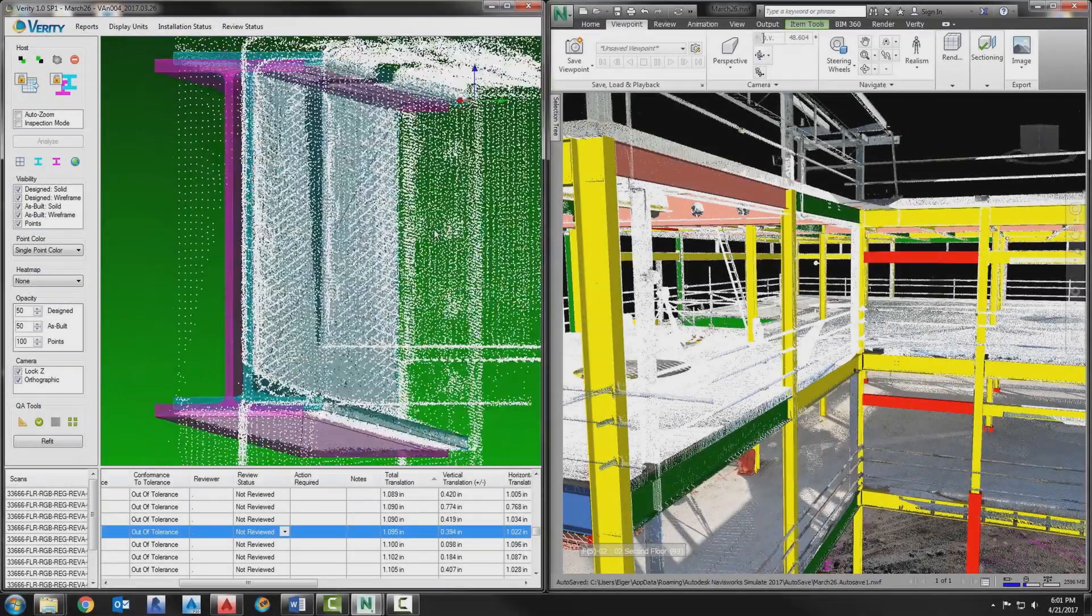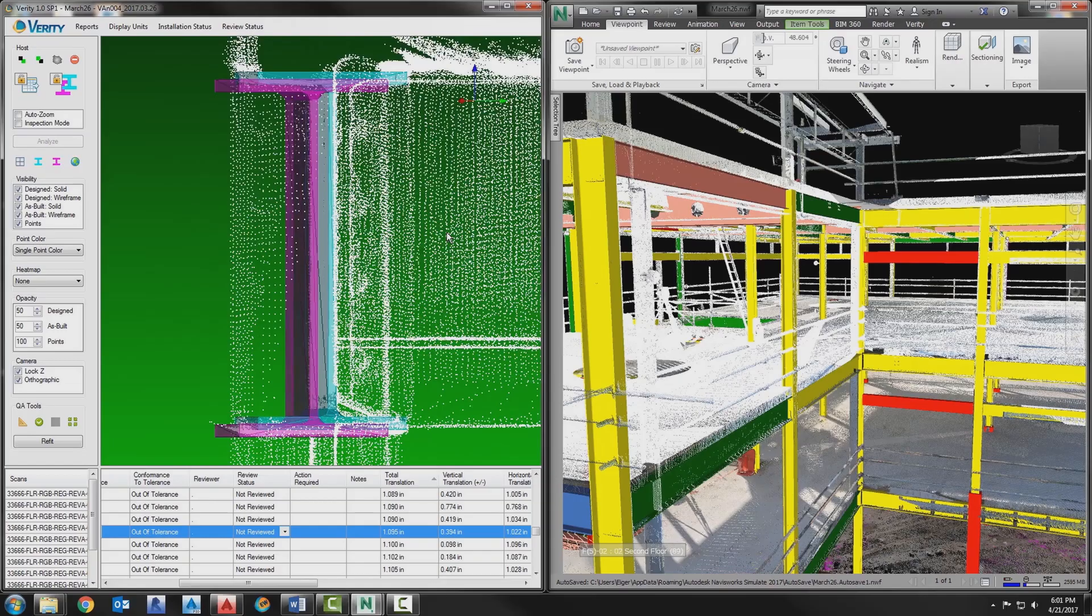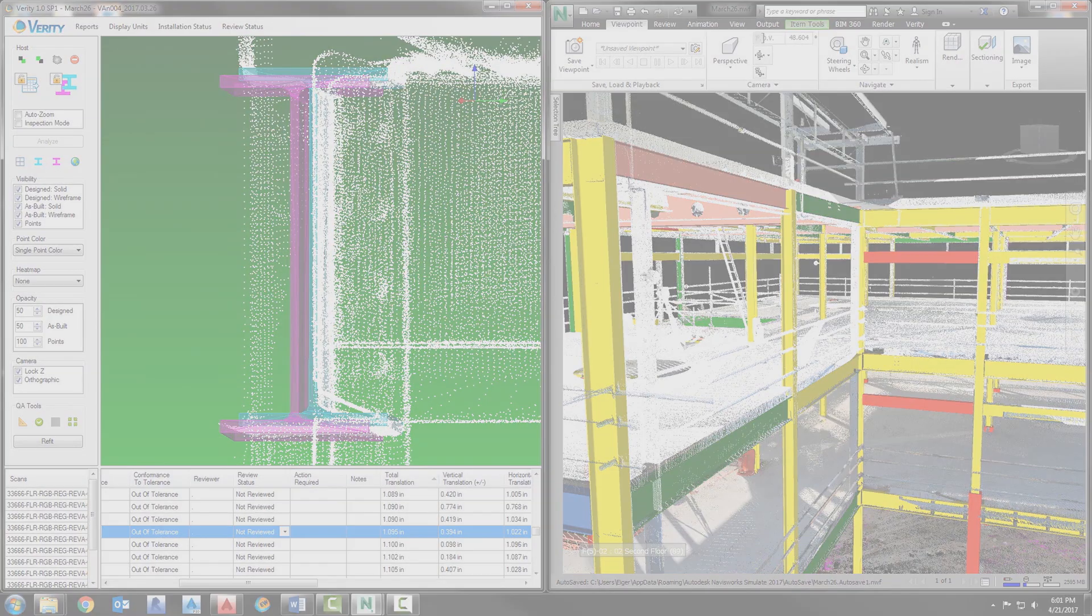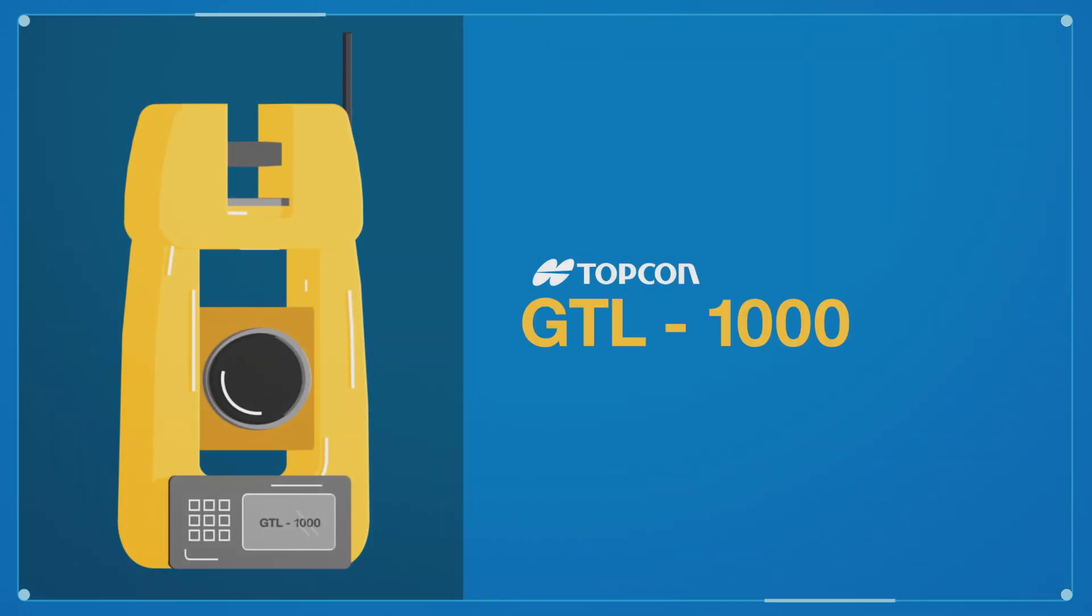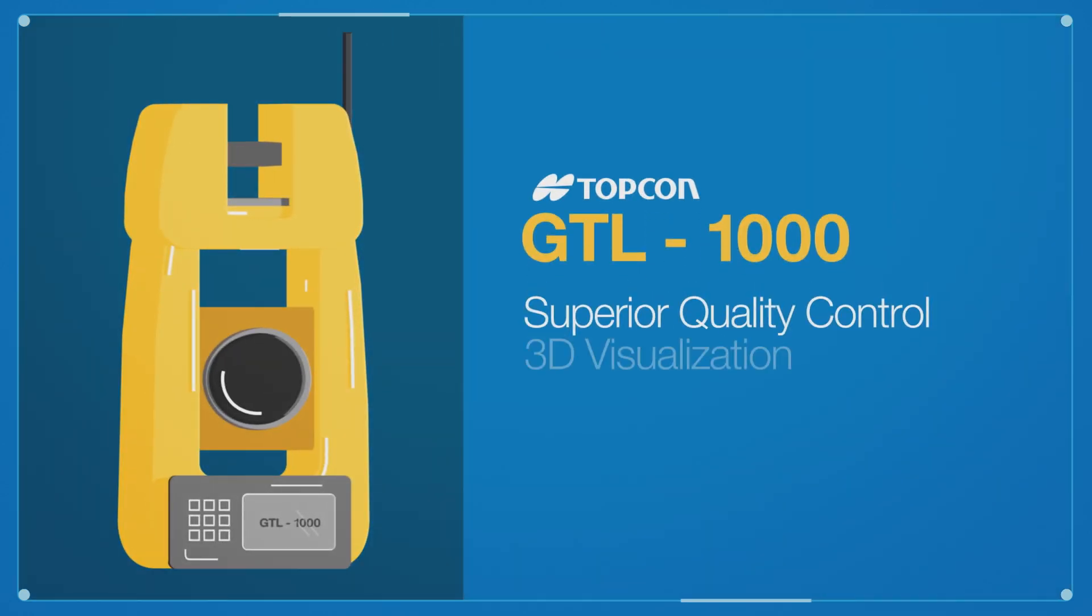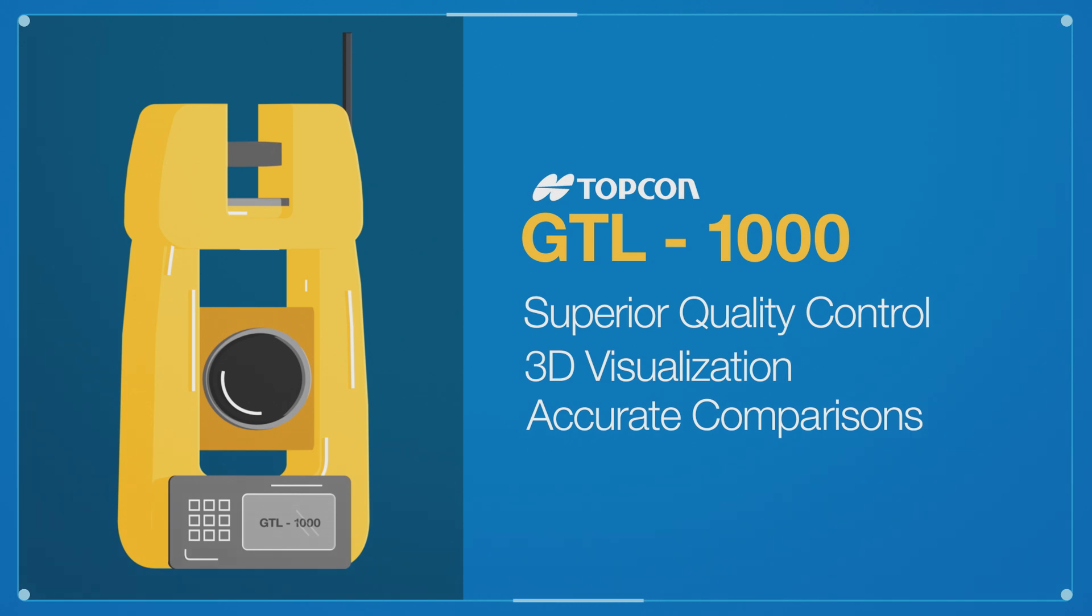Once the data is collected, it can be saved for later on-demand needs or analyzed against plan with just a few clicks. The GTL instrument combines the power of a total station and a 3D laser scanner, enabling superior quality control, 3D visualization, and accurate comparisons.